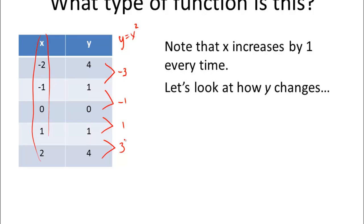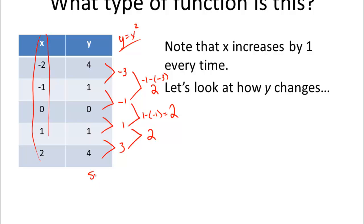We can see a pattern starting to happen, but the first differences are not the same — there's no single constant difference, so it's not linear. What we're going to do is look at what's called the second difference: we take the first differences and subtract those. Negative 1 minus negative 3 is 2. One minus negative 1 is 2. And 3 minus 1 is 2. The second difference is constant, so this is a quadratic function.